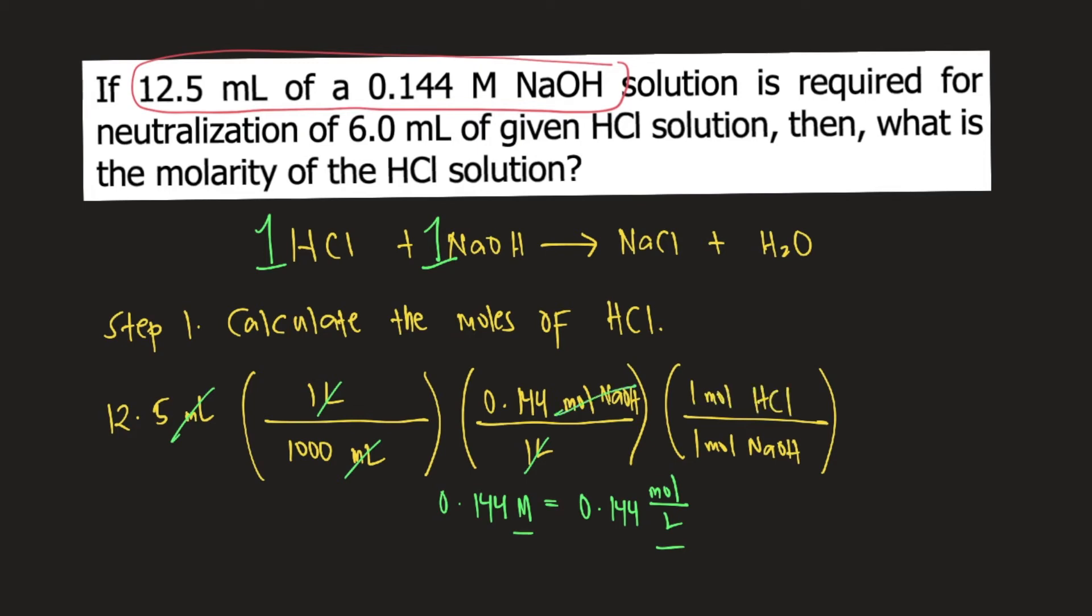So that the moles of NaOH will cancel and your final unit would be moles of HCl. And if you solve this, this is equal to 0.0018 moles.